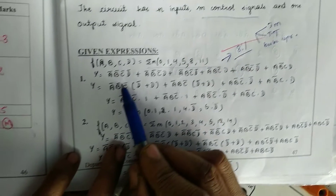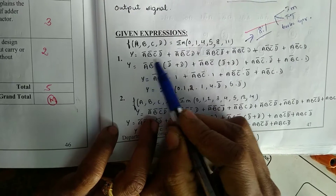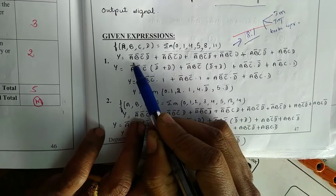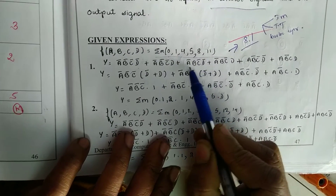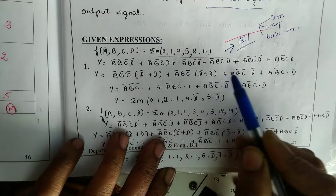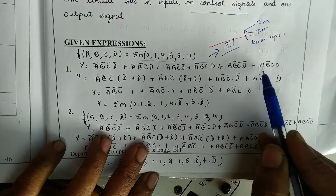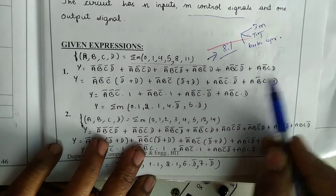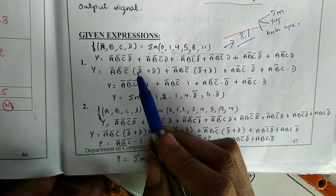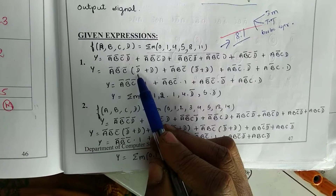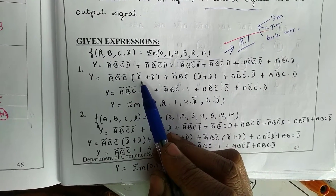For the Boolean expression method, whatever minterm number is given — 0 is a-bar b-bar c-bar d-bar, 1 is a-bar b-bar c-bar d, 4 is 0100, 5 is 0101, 8 is 1000, and 11 is 1011. After expanding the SOP form, you can take d as a common factor, because we are expressing the output using the variable d.